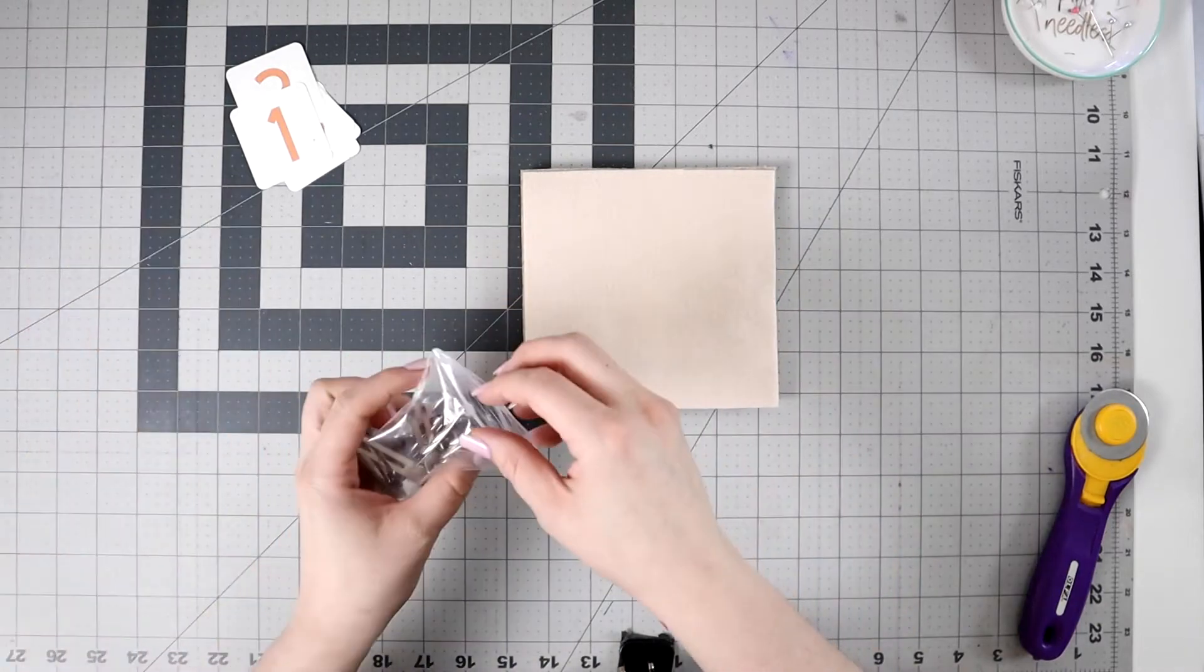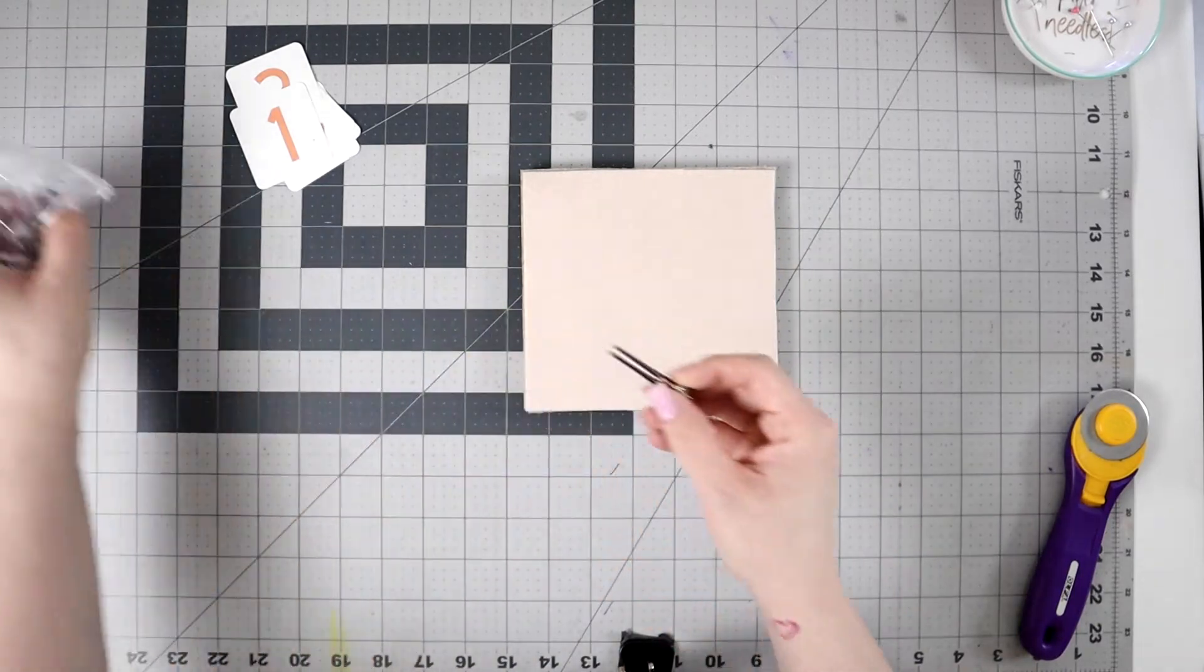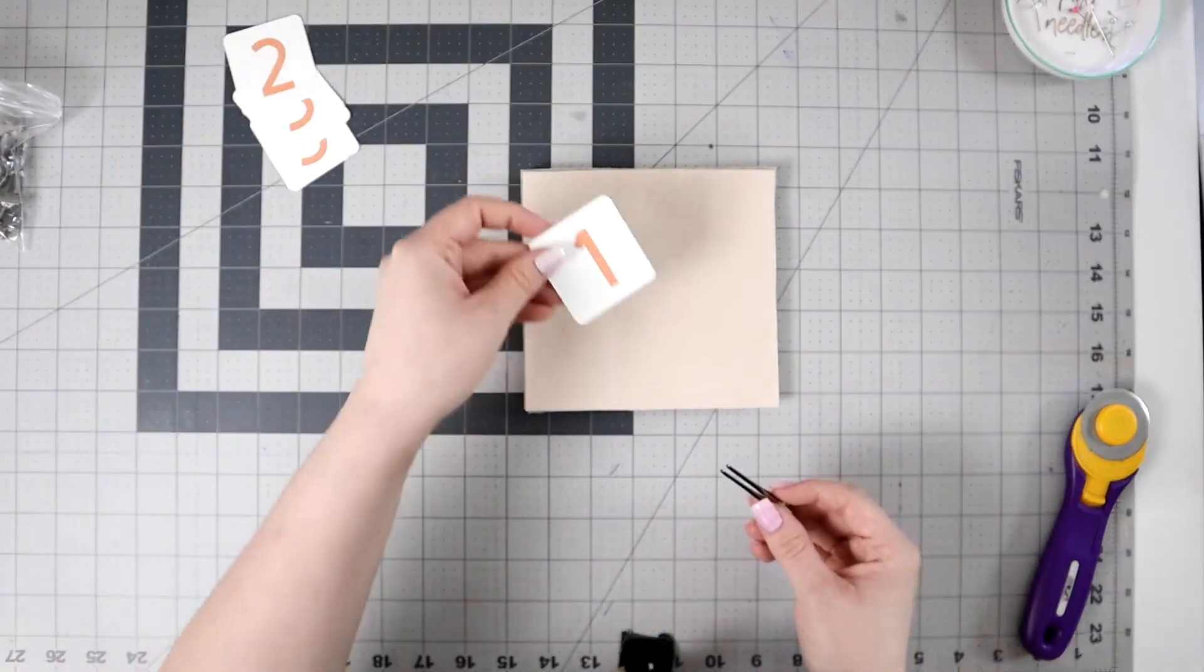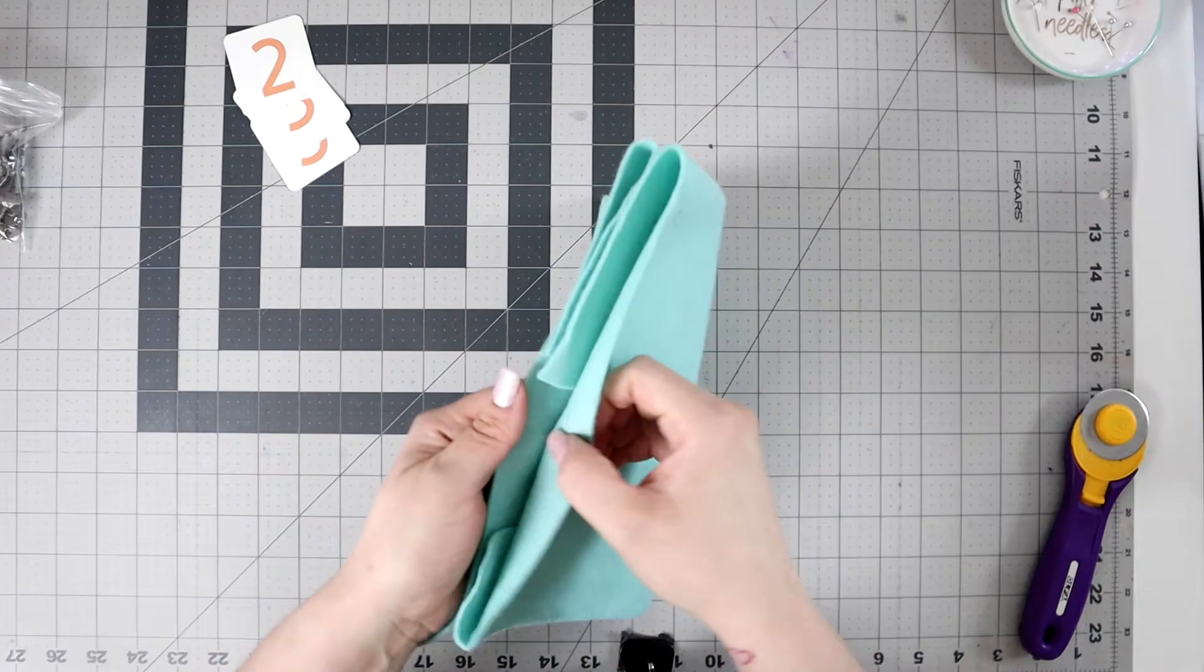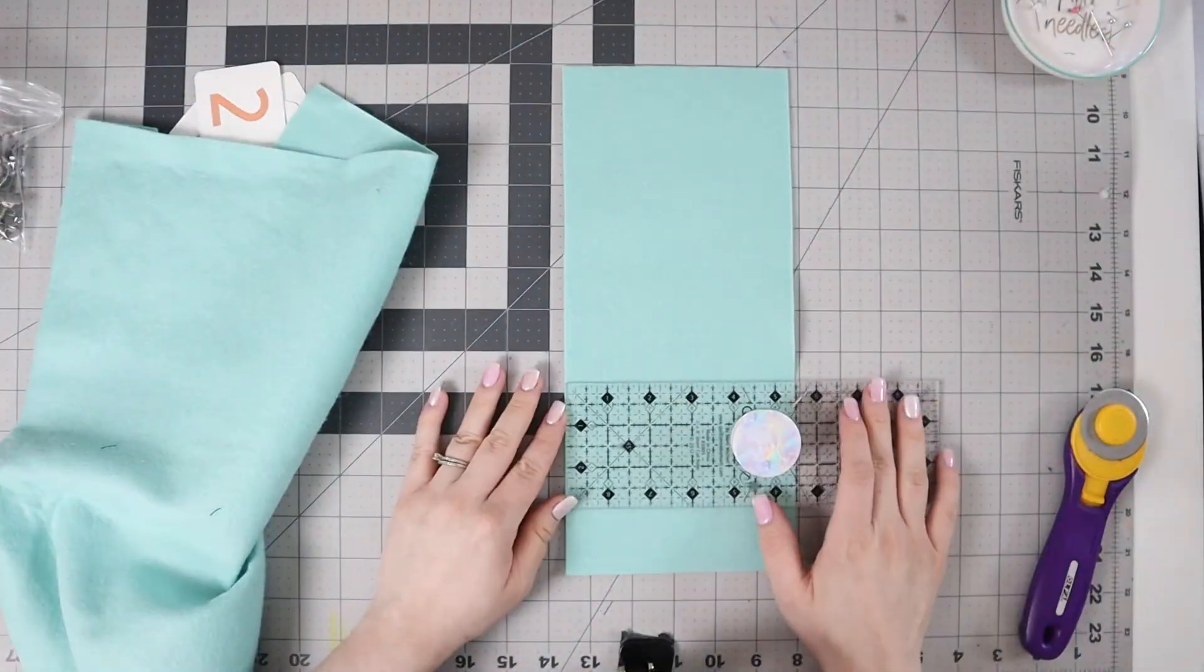I make sure to cut enough sheets to fill however many of that design she wants and then I take a number and I use a hair clip and I clip it onto that and I put it to the side and I move on until I finish the entire order.